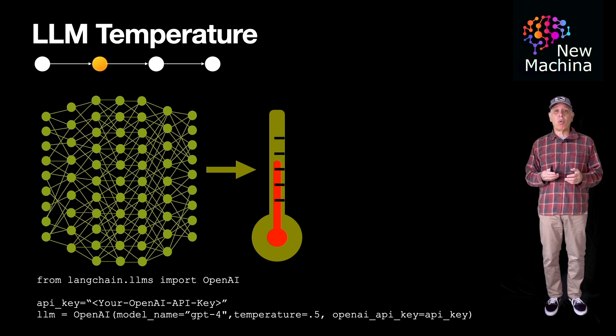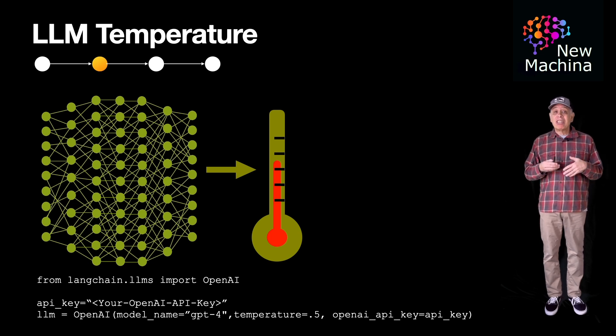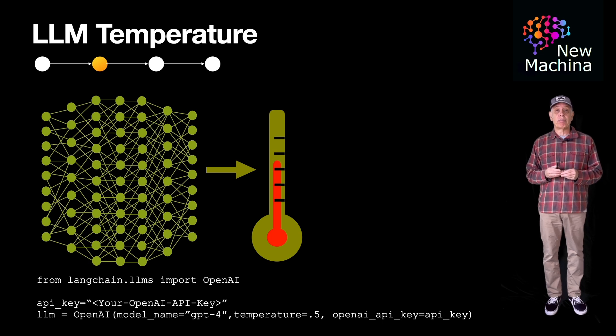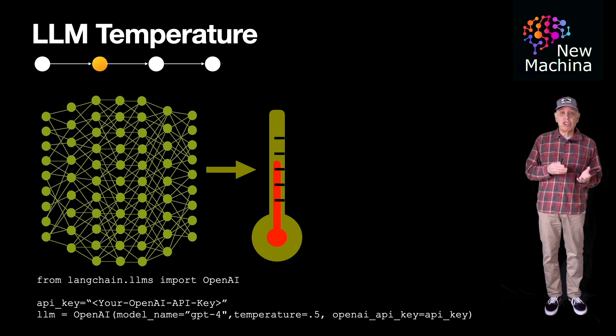Langchain is an open source orchestration framework which simplifies the building of systems integrating with LLMs. This Python code block instantiates a client object to an OpenAI chat GPT-4 LLM with a temperature of 0.5. Typically, temperature values can be set to between 0 and 1.